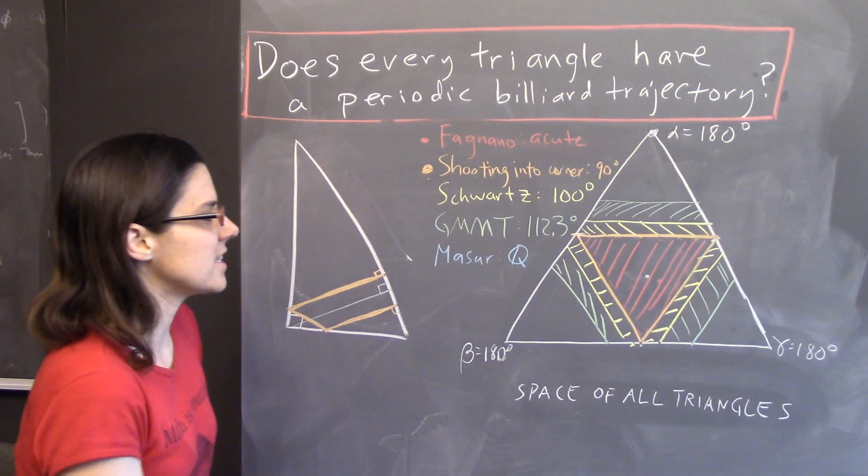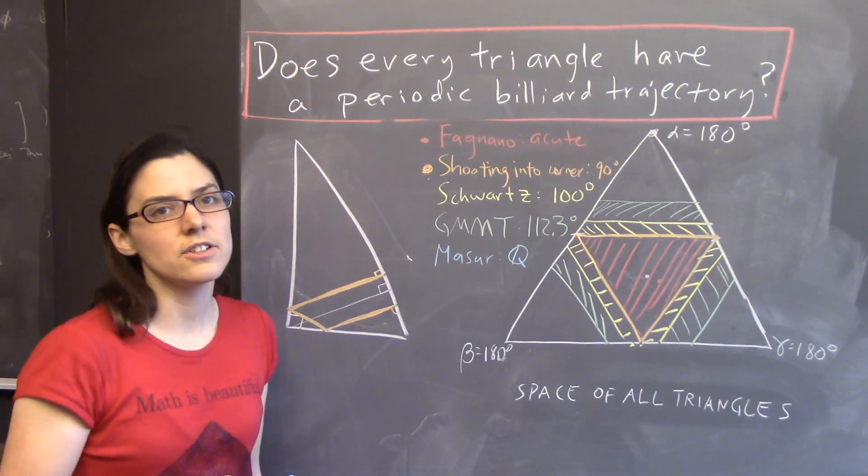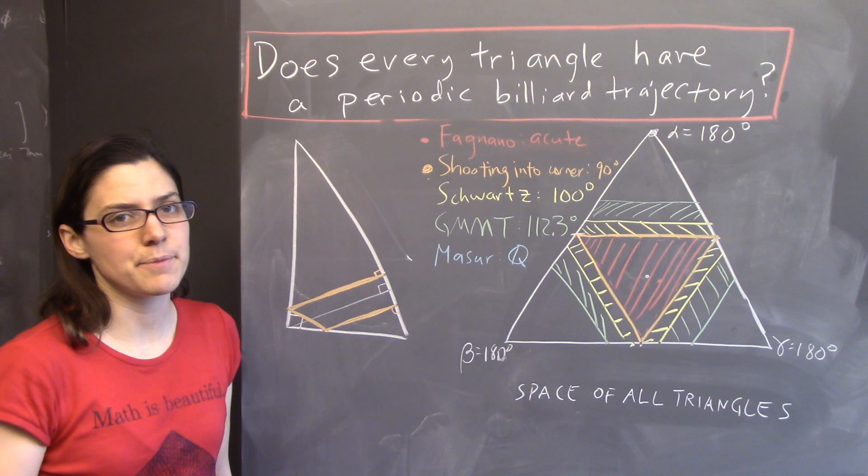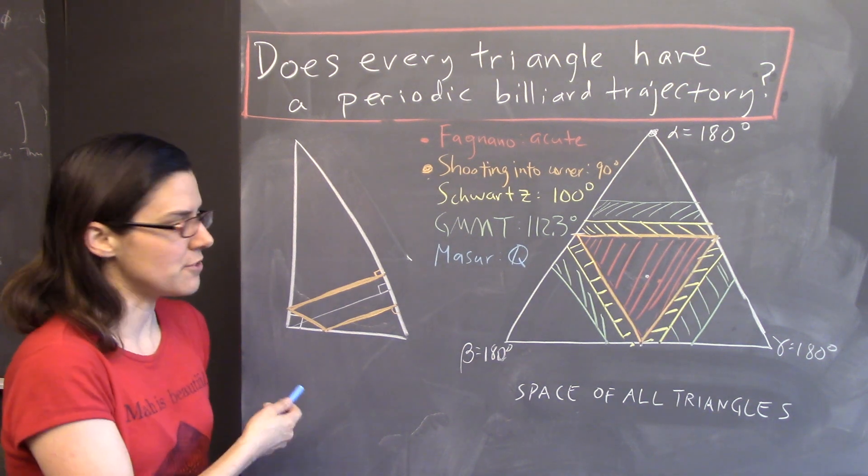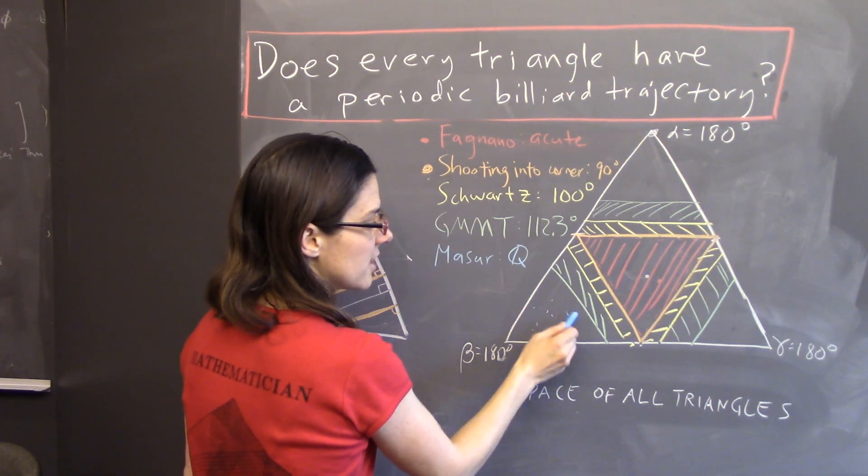And finally, I should mention that in 1986, Howie Maser proved that every triangle whose angles are rational has a periodic billiard trajectory. Now, that means that if you measure their angles in degrees, their angles are rational numbers.